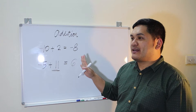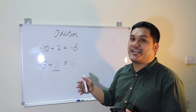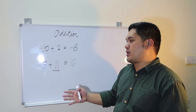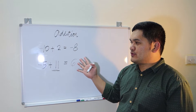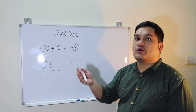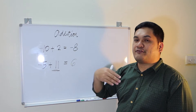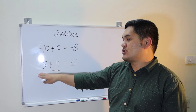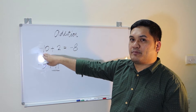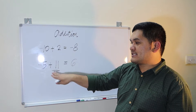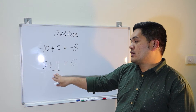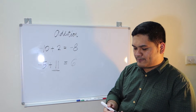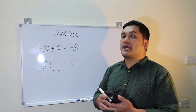Another example: negative 5 plus 11. You subtract the smaller number from the bigger number and then follow the sign of the largest number. So 11 minus 5 is equal to 6, and your sign is positive 6, because the greatest number is 11, which is positive. So you follow the sign of 11 — your answer is positive 6. Just remember: subtract the smaller from the bigger number, then follow the sign of the bigger number.